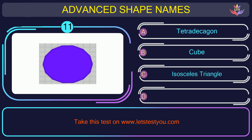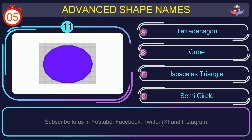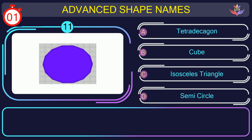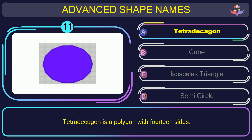Question number eleven. Could you recognize the name of the shape in this picture? The correct answer is option A. Tetradicagon. Tetradicagon is a polygon with 14 sides.